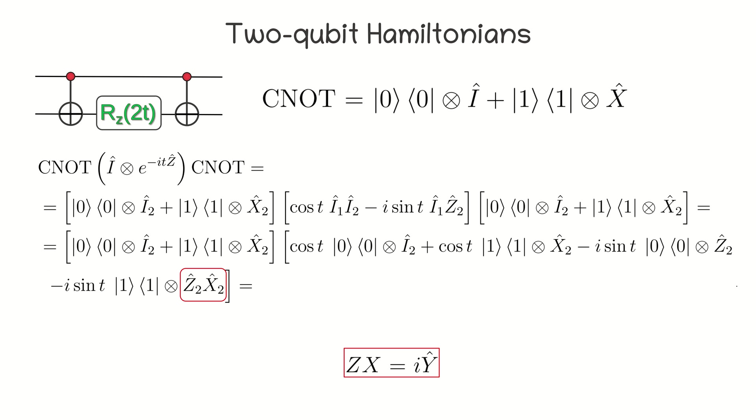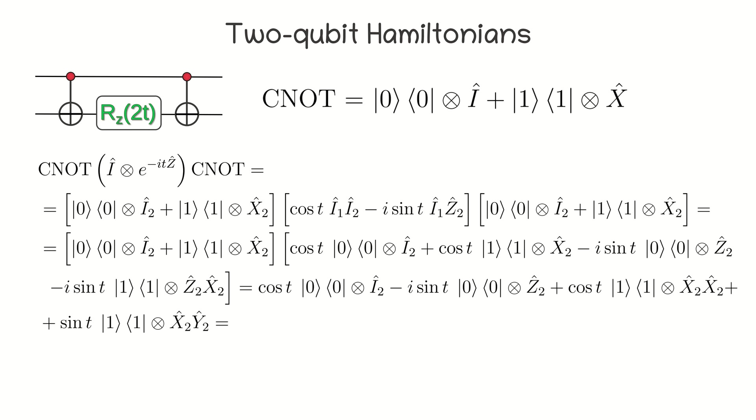Then, open the braces, taking into account that ZX is equal to iY in accordance with the algebra of the Pauli matrices. We can simplify this expression even more by replacing XY with iZ and double X with the identity operator.